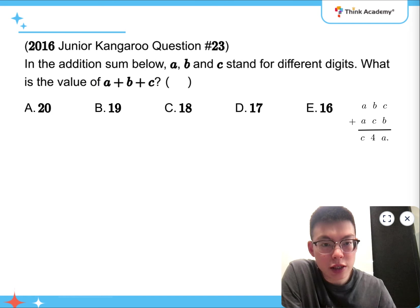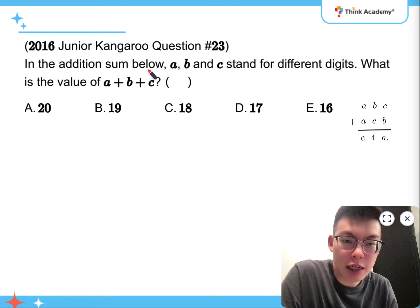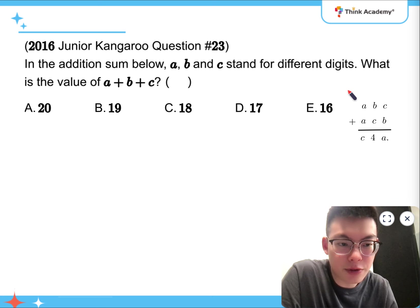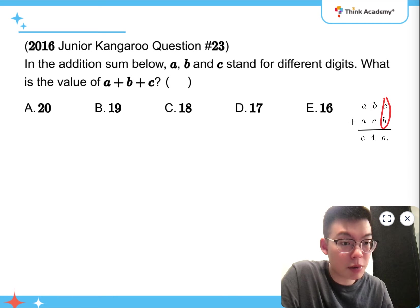And then question 23. In the addition sum below, A, B, and C stands for different digits. What is the value of them? So there's a number puzzle question. You can see that C and B adds up to something ending with A. B and C adds up to 4. A and A adds up to C. So these are the three columns.